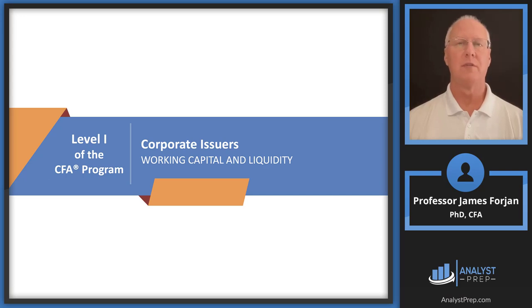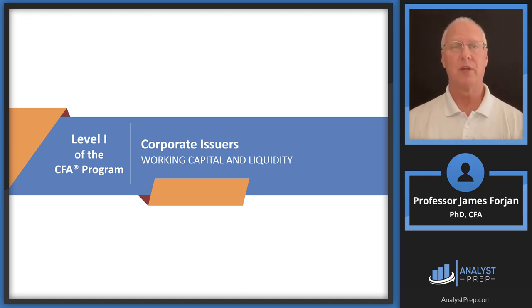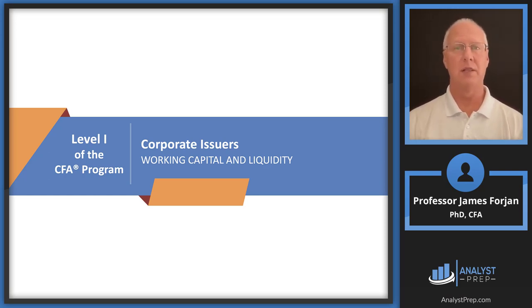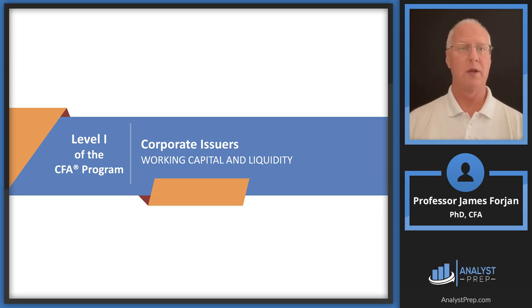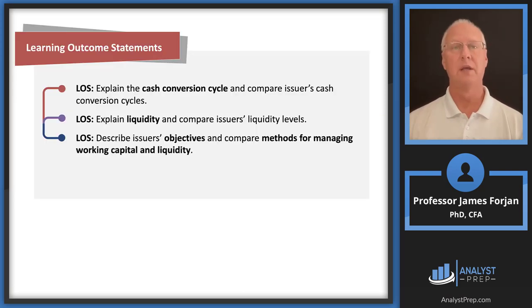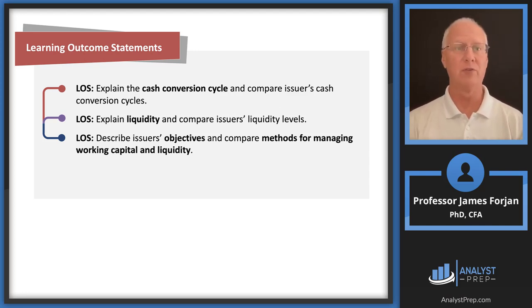Hey, it's Jim, and this is level one of the CFA program, the topic on corporate issuers and the learning module on working capital and liquidity. We've recently had some good conversations on the financial statements. Our focus here is on the balance sheet — in particular the top left-hand side and the top right-hand side. We're going to make a determination on the quality of the liquidity facing a business. We're going to hear words like liquidity, cash conversion cycle, managing working capital, but essentially these LOSs could be wrapped up in one word: solvency.